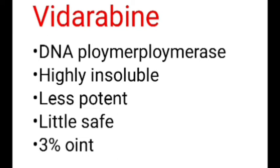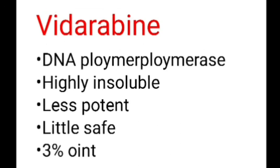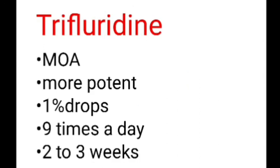Vidarabine — the next antiviral — its mechanism of action is that it inhibits DNA polymerase. It is a little safer compared to idoxuridine, but it is highly insoluble and less potent. It is used as 3% ointment five times a day.